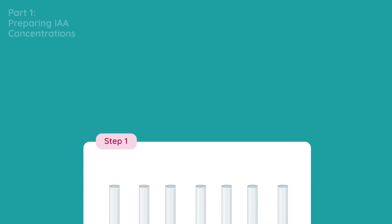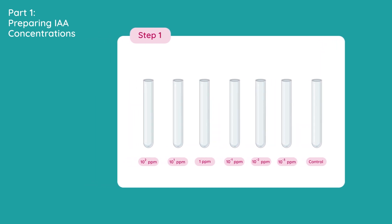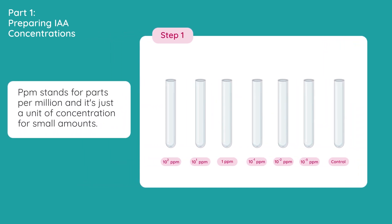So let's look at Part 1, preparing the IAA concentrations. Label six tubes: 10 to the power of 2 ppm, 10 to the power of 1 ppm, 1 ppm, 10 to the minus 1 ppm, 10 to the minus 2 ppm, and 10 to the minus 3 ppm, and then label a seventh test tube as the control. Ppm stands for parts per million, and it's just a unit of concentration for really small amounts.